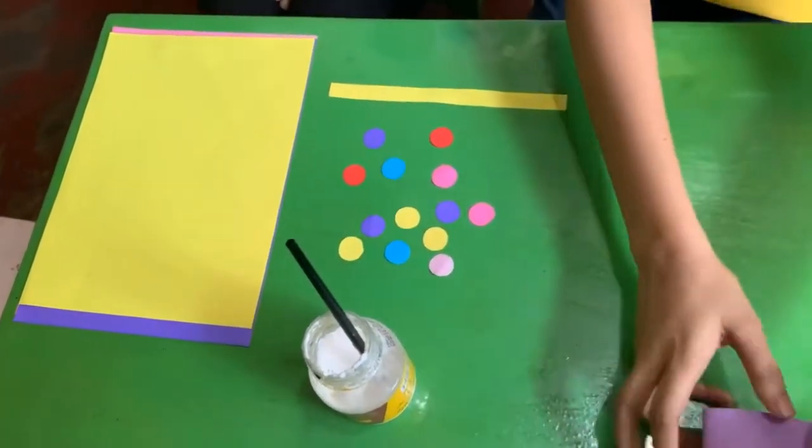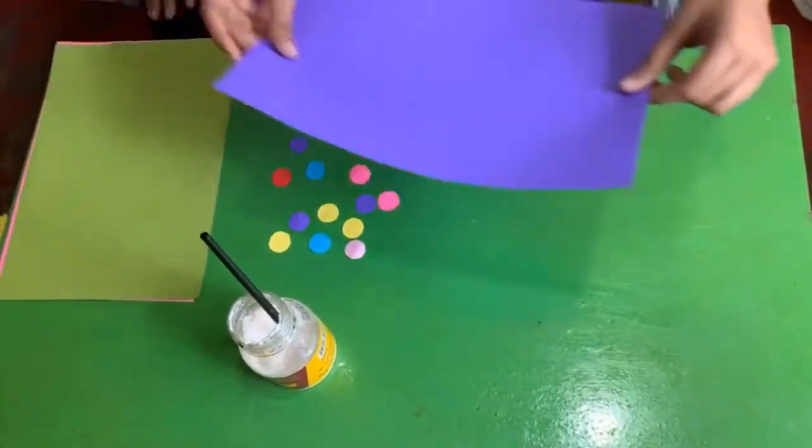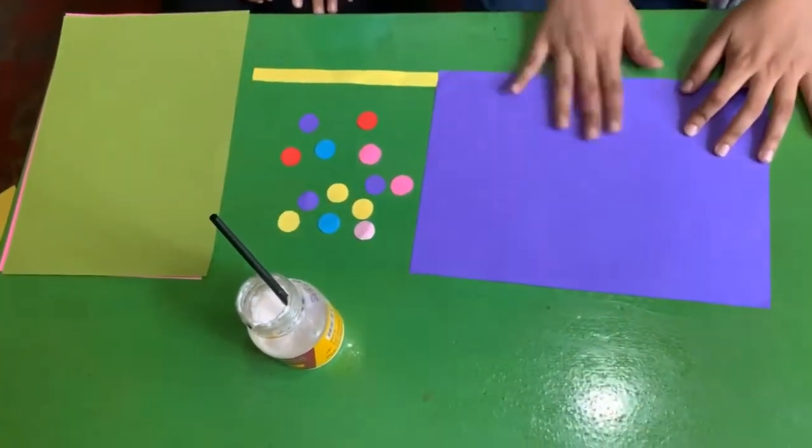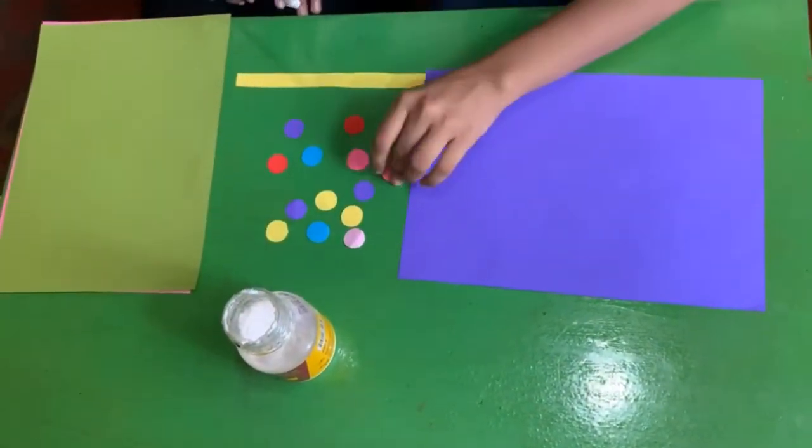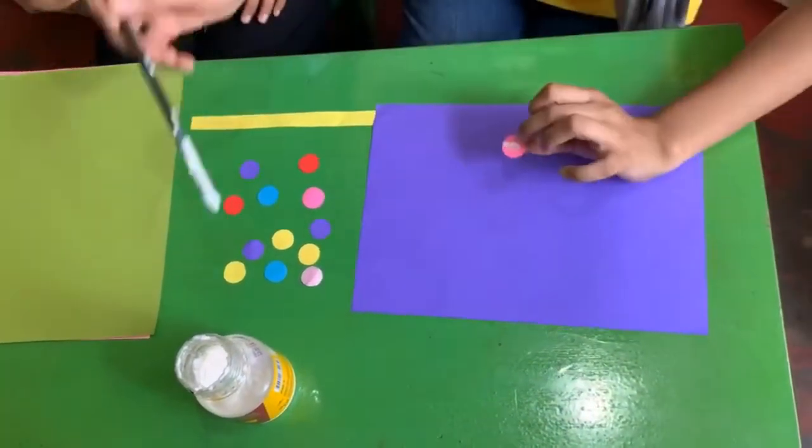Okay, so now you have to take this A4 sheet and you have to paste all the circles on this A4 sheet. So let's paste it. Can you help me? Let's do it.